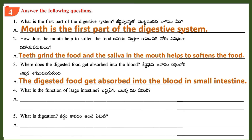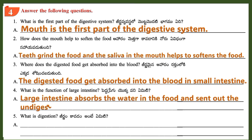Question 4: What is the function of the large intestine? Answer: The large intestine absorbs the water in the food and sends out the undigested food through the anus.